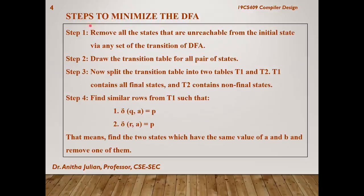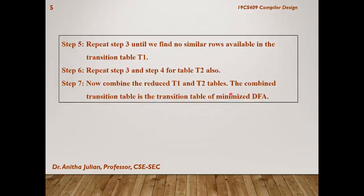You already know that there are six steps in this process. First of all, remove the unreachable states and then draw the transition table for the obtained DFA. Then split the transition table as final state table and non-final state table. And then find the similar rows. If there are any similar rows, we have to replace them by one particular row.